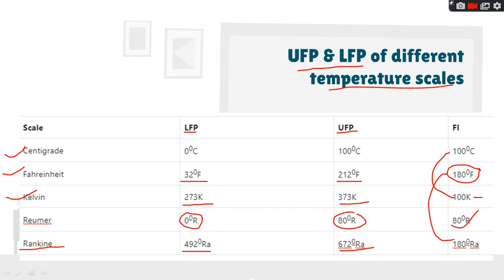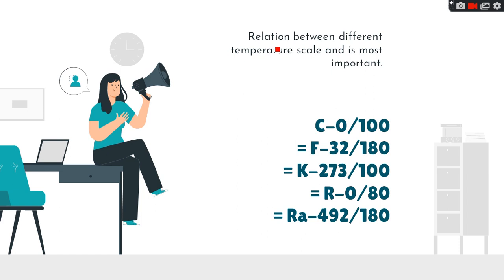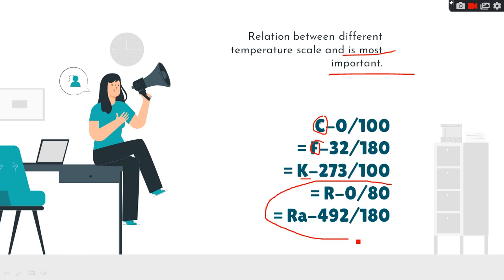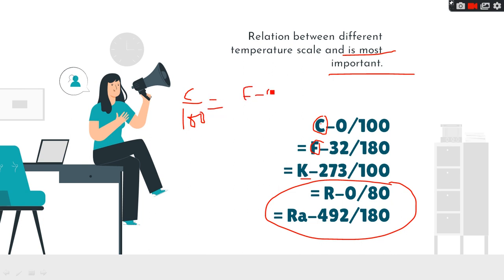Now let's move on to the relation between temperature scales, which is the most important part. To convert from Celsius to Fahrenheit you use the relation: C/100 = (F − 32)/180. For Reaumur: (R − 0)/80, and for Rankine: (Ra − 492)/180. While doing numericals, you use: C/100 = (F − 32)/180.